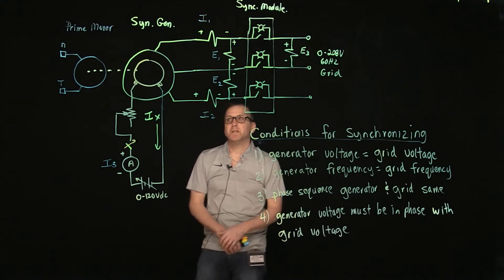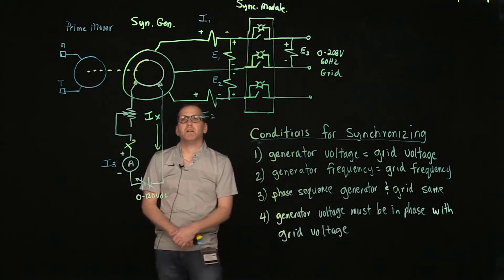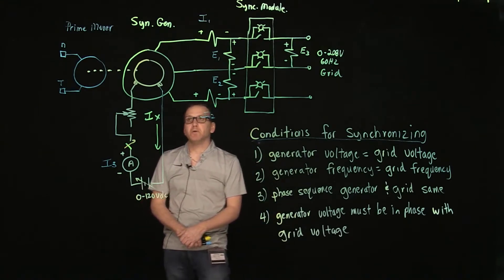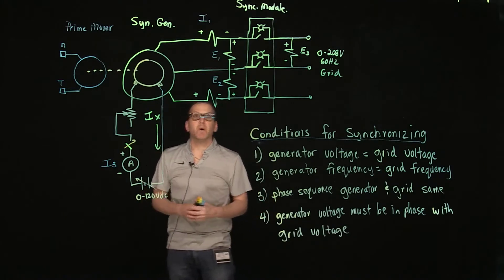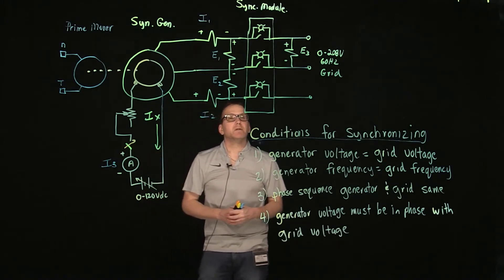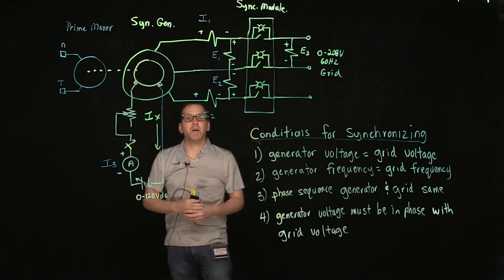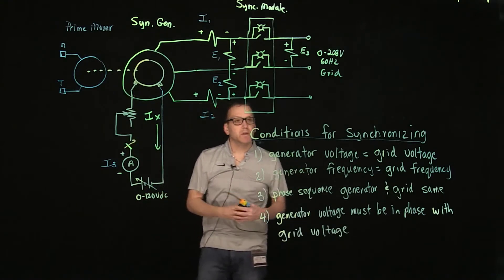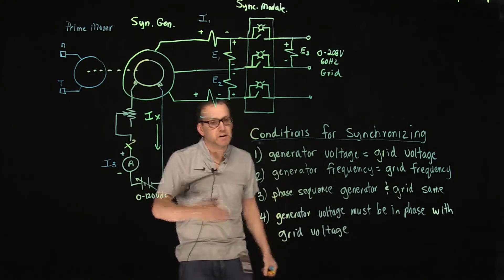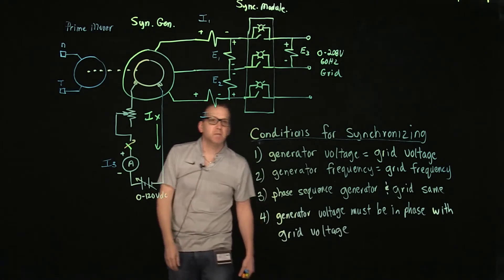Whether we are trying to synchronize a small synchronous generator like our lab machine, which is about a 250 watt generator, or we want to synchronize a large 400 megawatt unit, the conditions for synchronizing are the same.